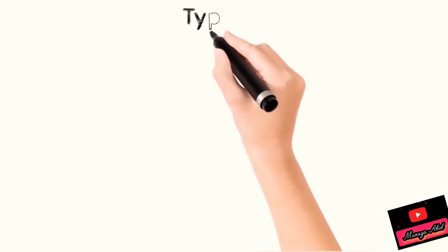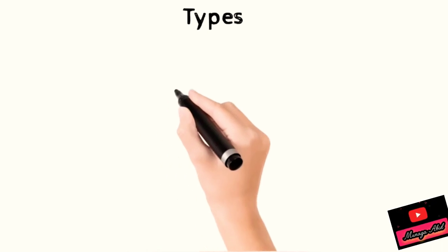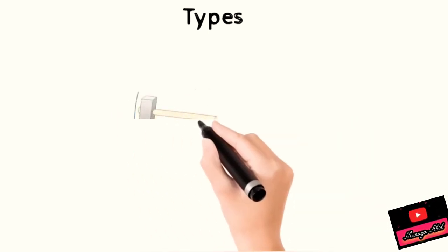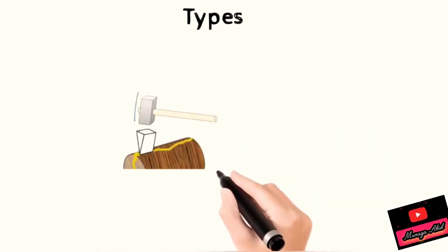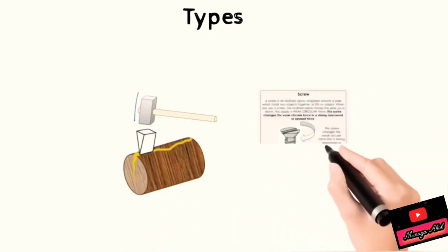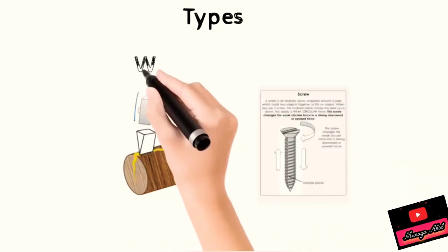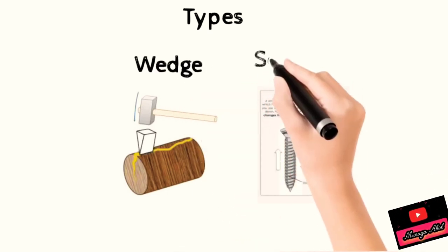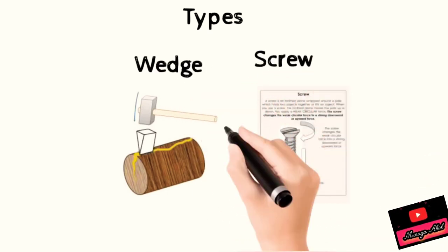Now I will tell you what are the types of inclined plane that we are using in our daily life. It's a wedge - when two inclined planes are back-to-back meeting, they make a wedge. And a screw is a bolt that you use mostly.